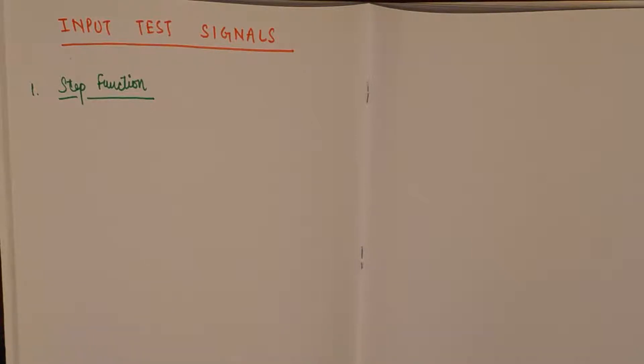The characteristic property of a step function is defined as the sudden application of an input signal. So whenever we need to analyze any control system for the sudden application of a certain parameter, we will test it by making use of the step function.